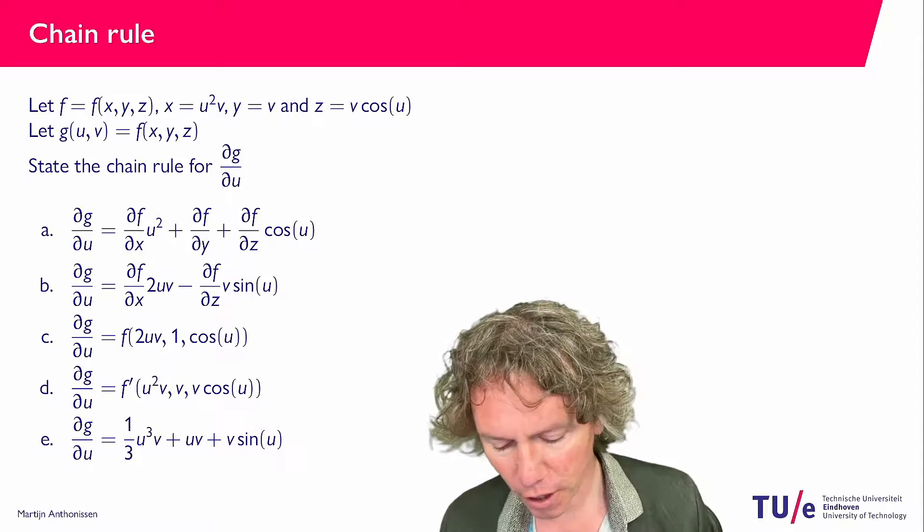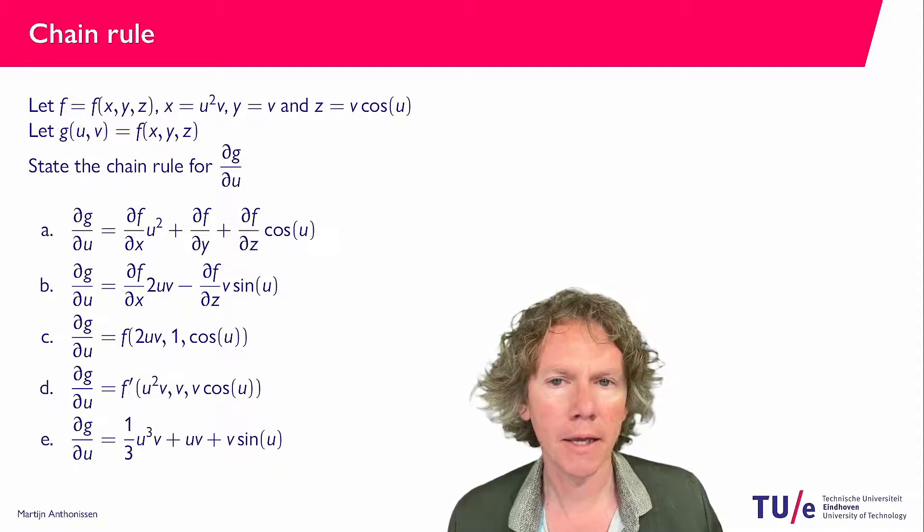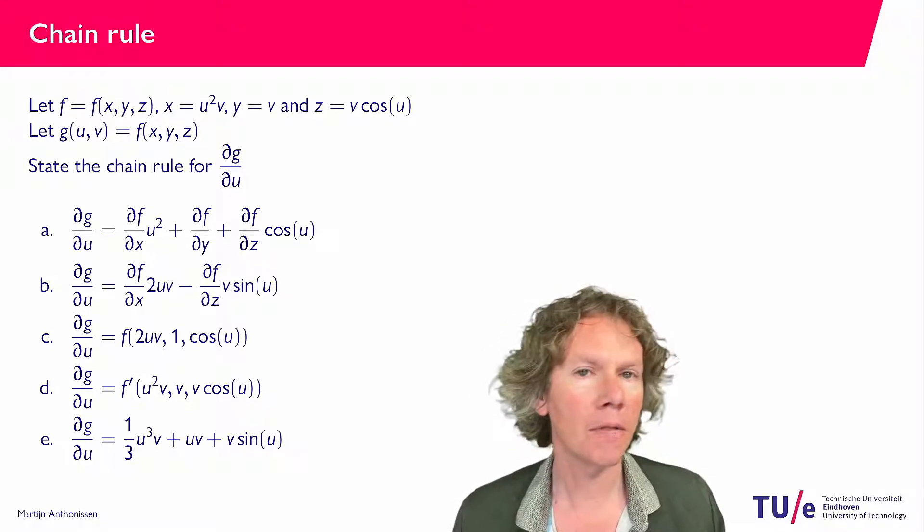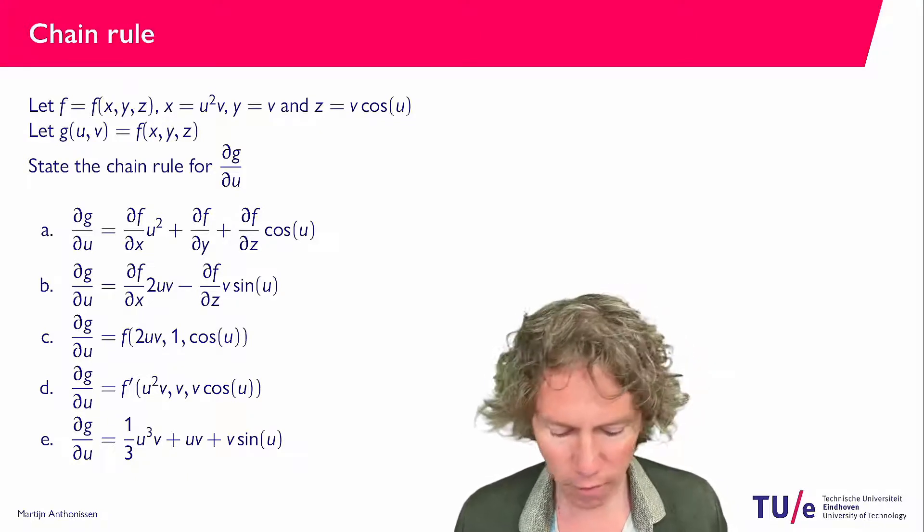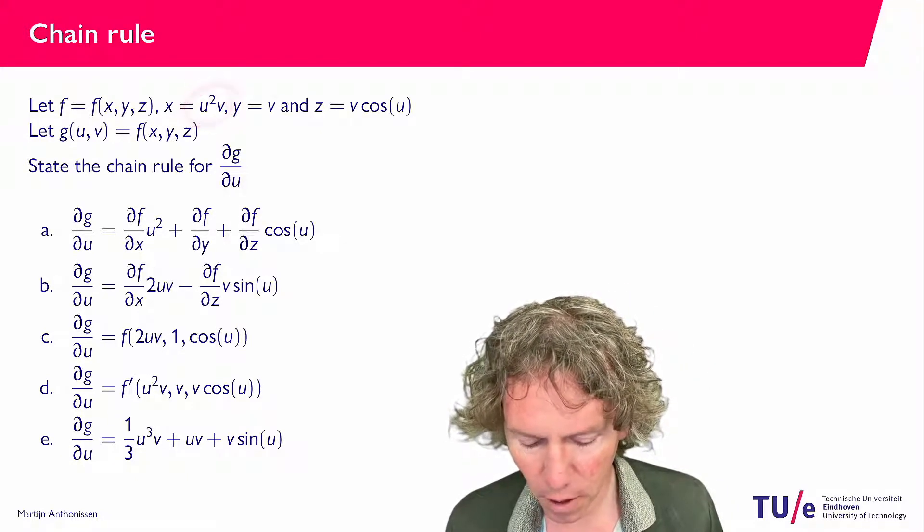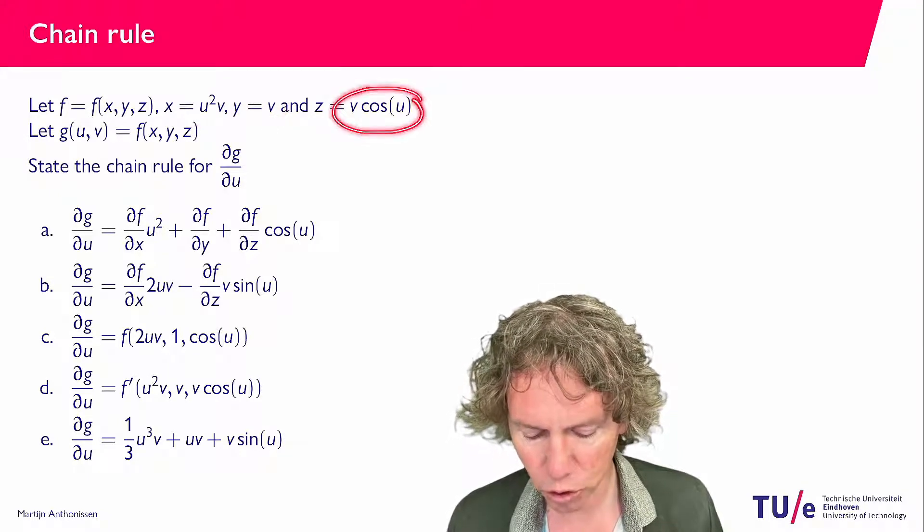We have a function f of three arguments x, y, and z. And x, y, and z are themselves functions of variables u and v. So x is u squared v, y equals v, and z is v times cosine u.